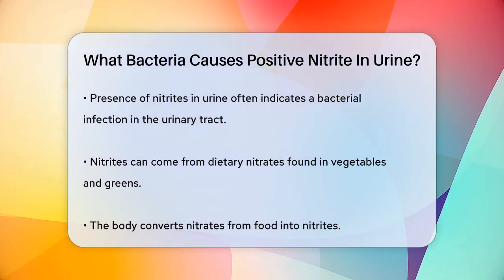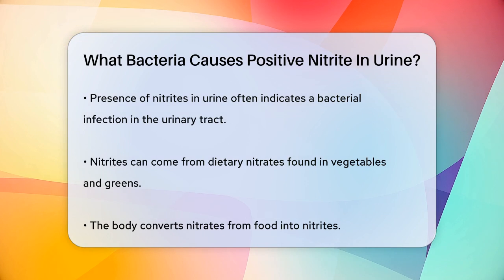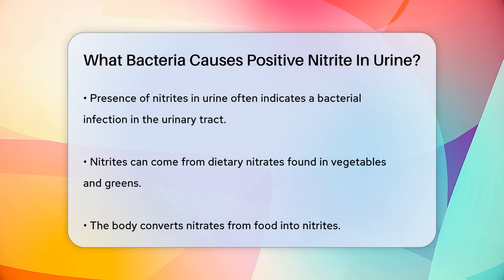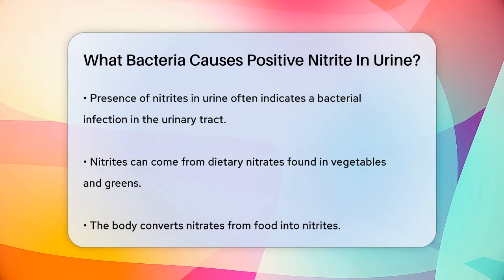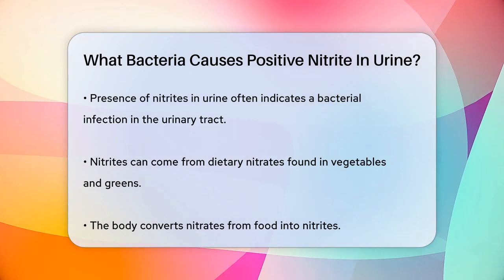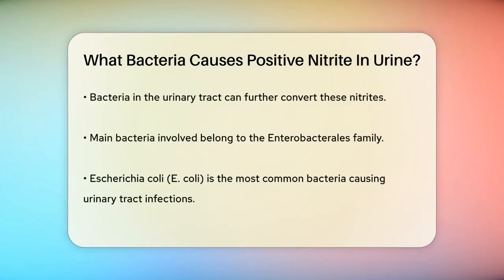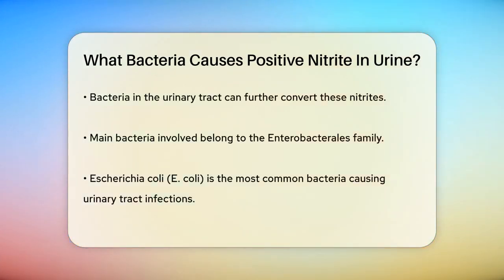When you eat foods rich in nitrates, like vegetables and greens, your body converts these nitrates into nitrites. However, if bacteria are present in your urinary tract, they can further convert these nitrites, making them detectable in your urine.